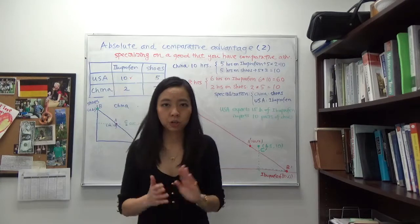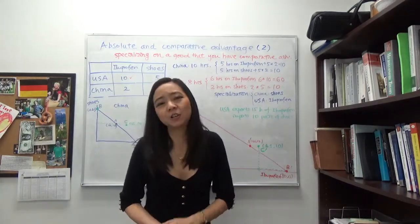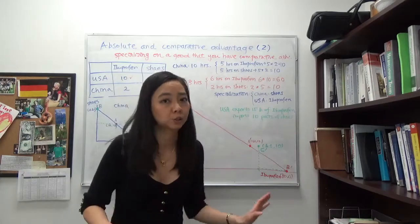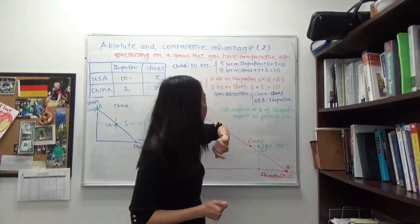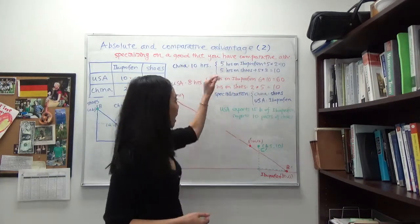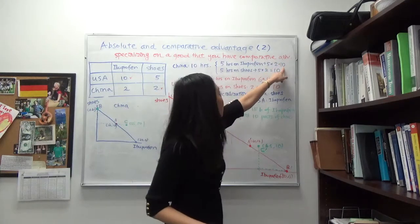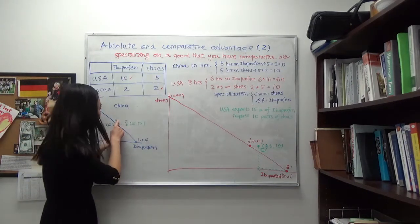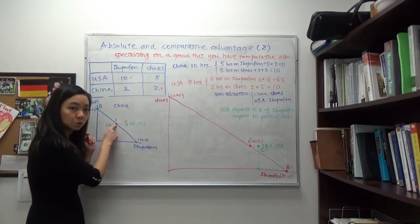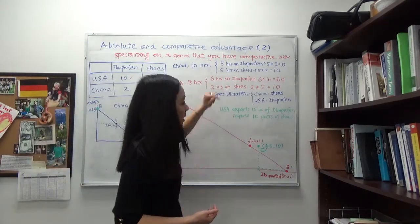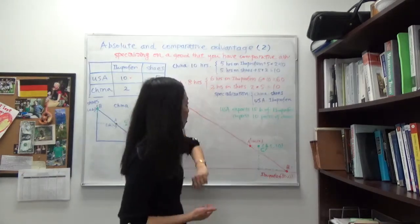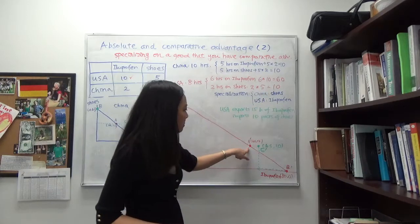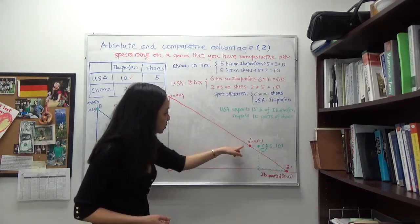Without trade — in autarky — you consume whatever you produce, and you can only produce on the production possibility curve, never outside it. Suppose China allocates five hours on ibuprofen and five hours on shoes; China produces ten bottles of ibuprofen and ten pairs of shoes — I mark this point A. For the US, suppose they allocate six hours on ibuprofen and two hours on shoes, producing 60 bottles of ibuprofen and ten pairs of shoes — point A prime.